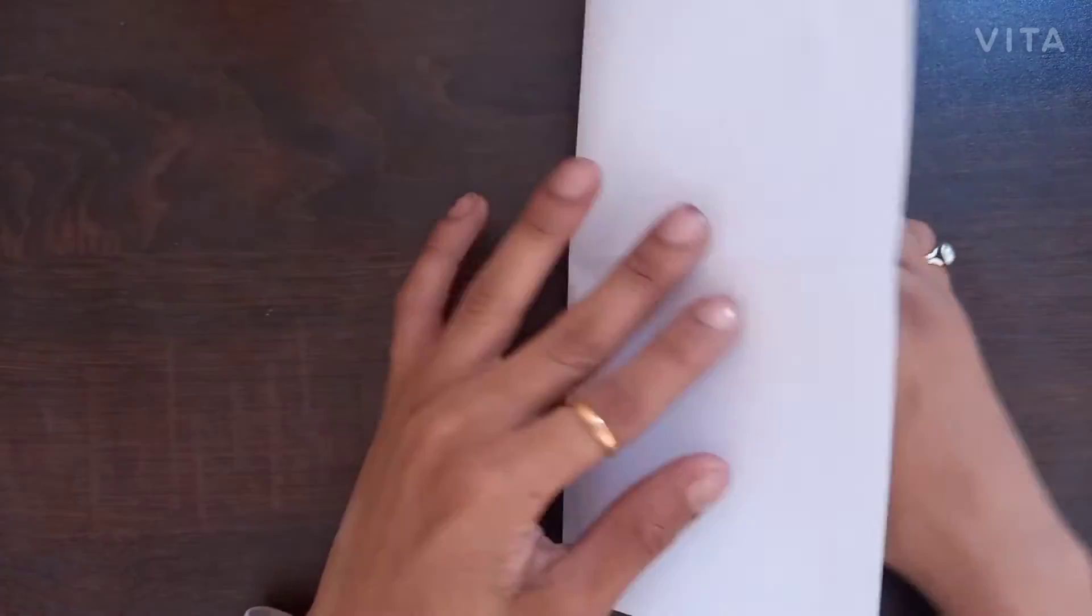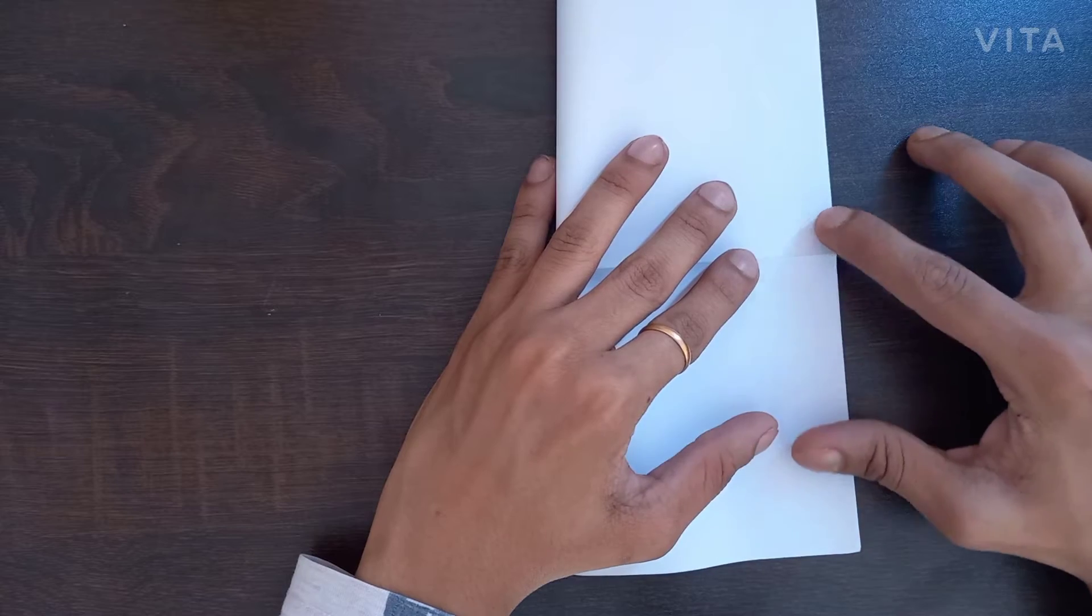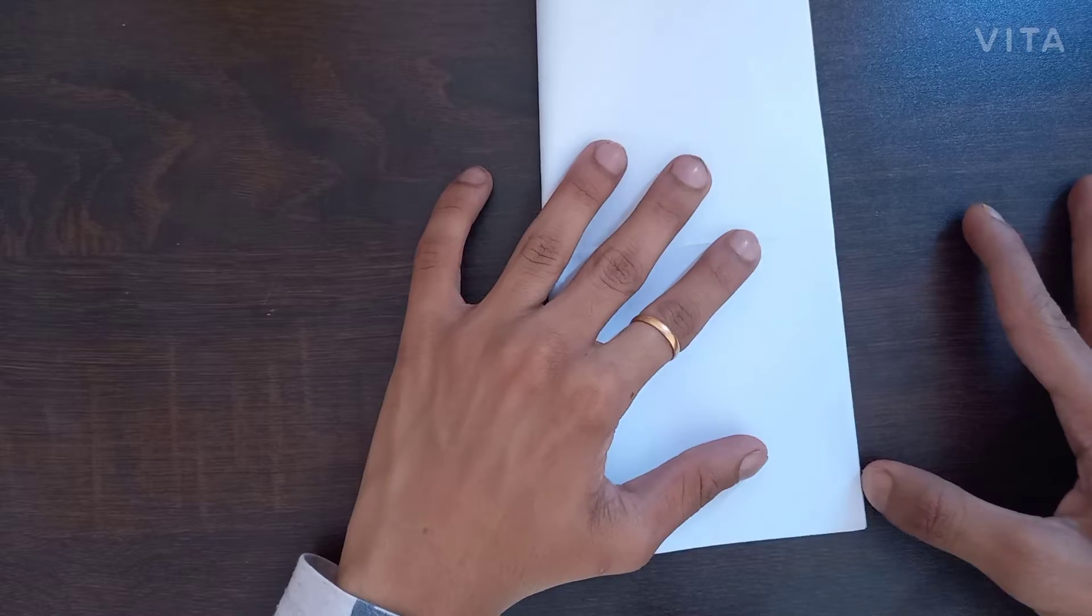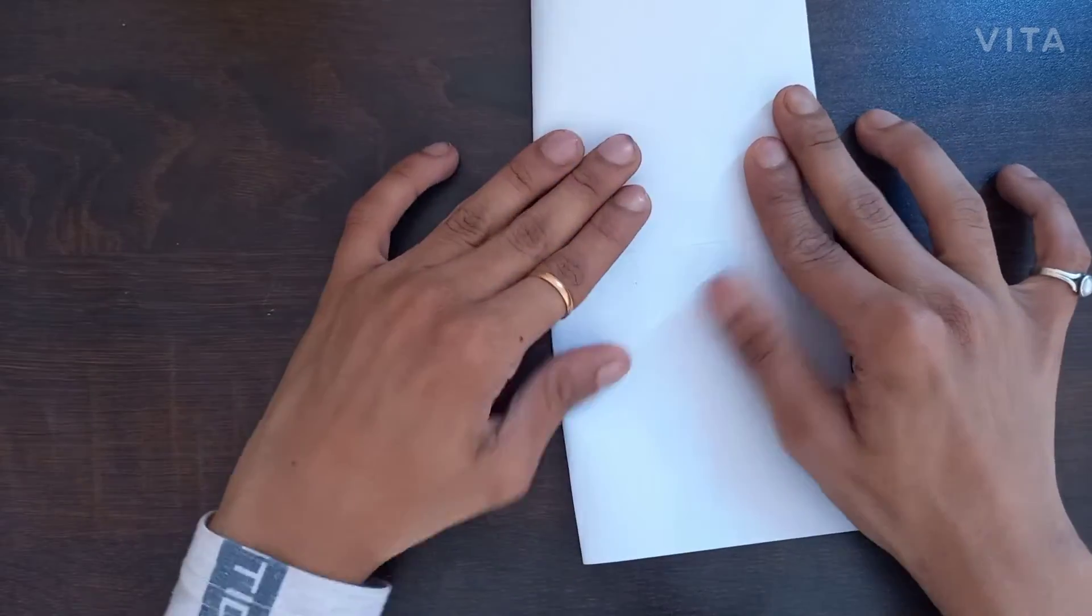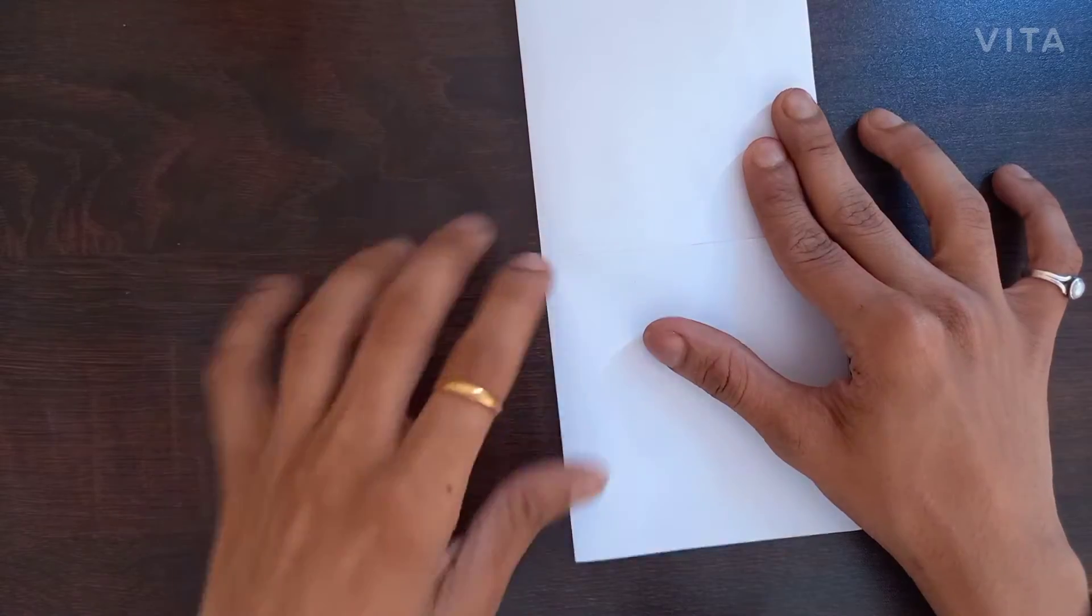Fold it again in half, just like this. And make sure to line the edges properly. Squeeze it hard with your nails.